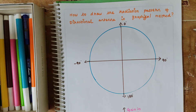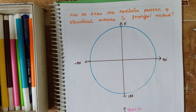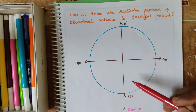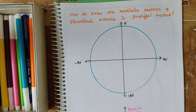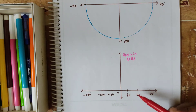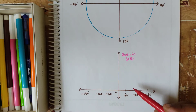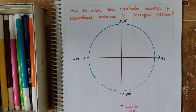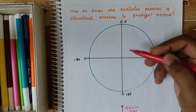Hi, this is Prakash. Hope you all are fine. In this session we are going to see how to draw the radiation pattern of a directional antenna in graphical method. This is the polar form I will draw and show you — the polar form of the graph — and this is the graphical method to draw radiation pattern. Let's now start with the polar graphical method.